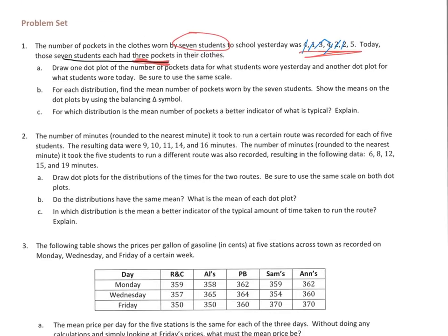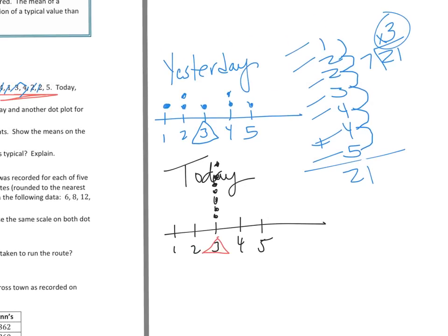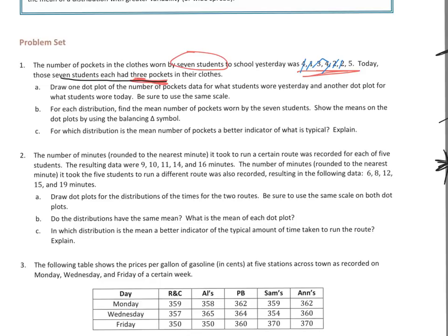The last part, C says, for which distribution is the mean number of pockets a better indicator of what is typical? Well, we have mean of 3 for both of them. And which one is really summarizing the data the best using the mean? Up here for yesterday, there's a lot of variability, meaning there's a lot of different ones. There's 1's, there's 2's, there's 3's, there's 4's, there's 5. For today, there's only 3's. So the mean actually shows the typical for that one. So it's for today. That's the best indicator because the mean is 3 pockets and it's a better indicator for today's distribution because everyone in today's distribution had 3 pockets.